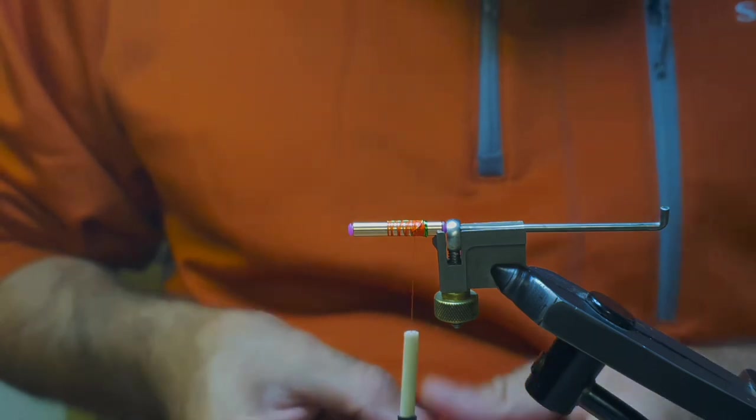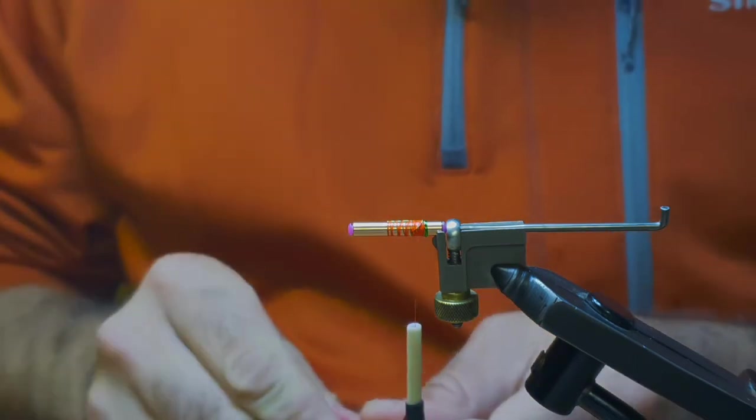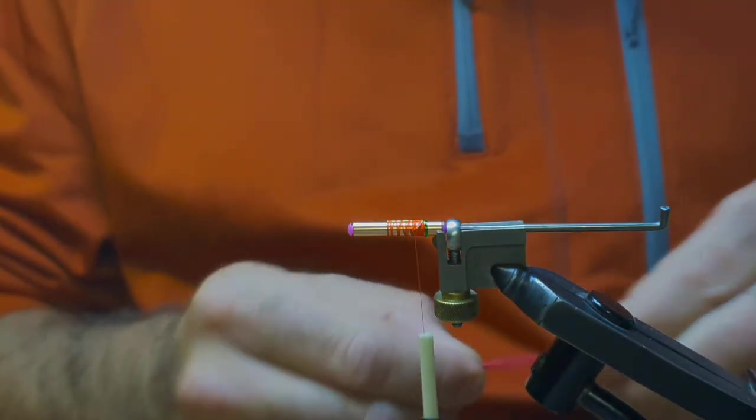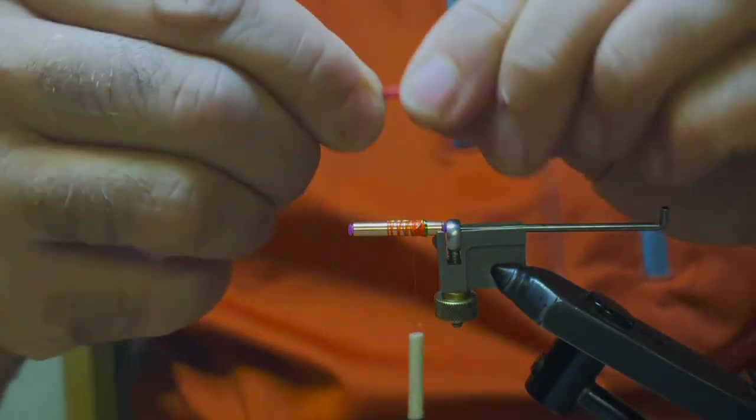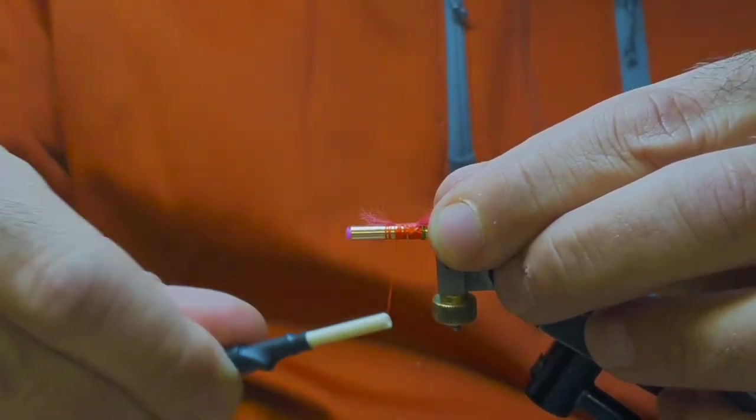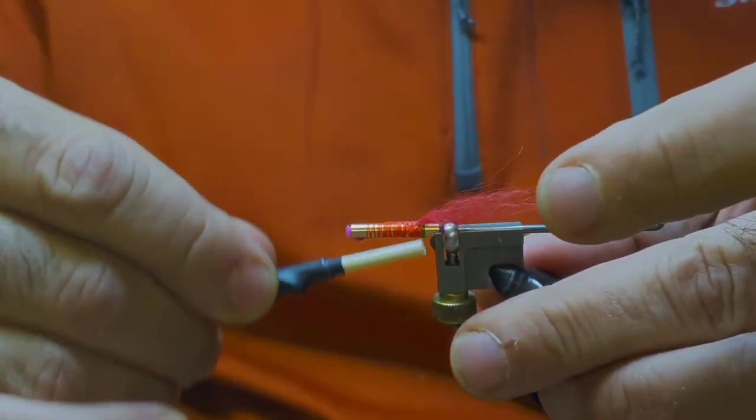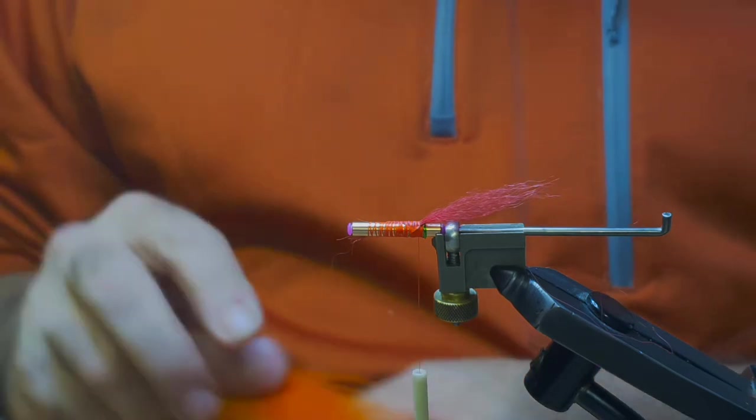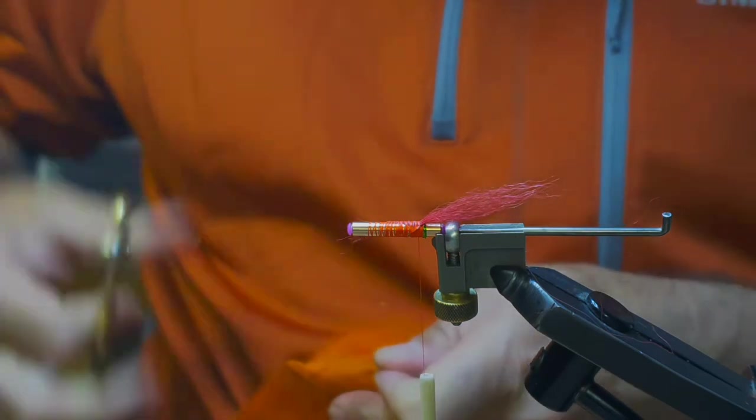So first part of the tail, go with the red Arctic runner. Tail quite sparse, it's a three part tail so you don't want to go mad thick with the tail. So that's the first bit. And then lay on top of that a slightly longer piece of the orange Arctic runner. You want that to stick out just a wee bit longer, probably something around there.